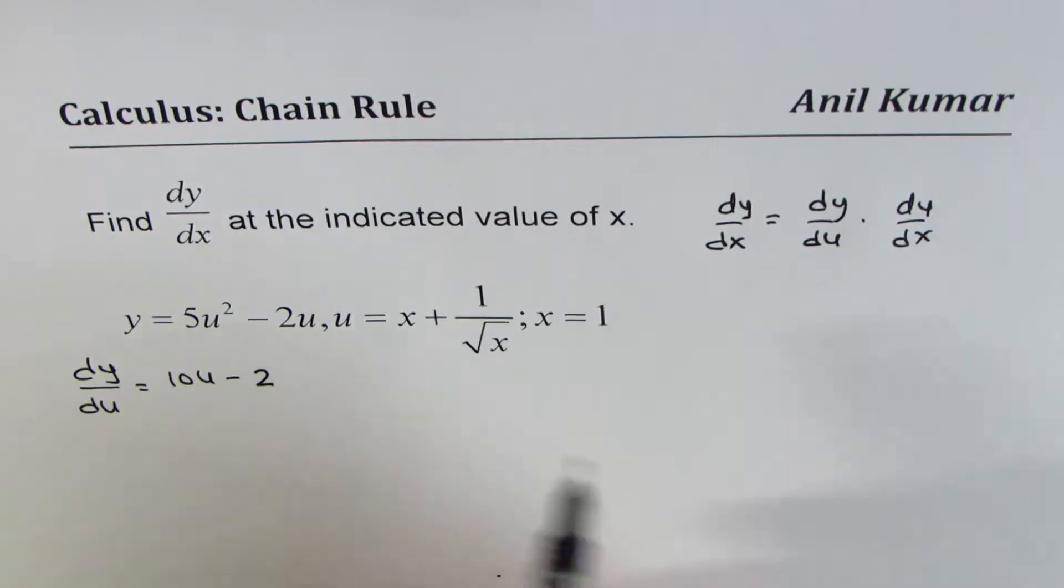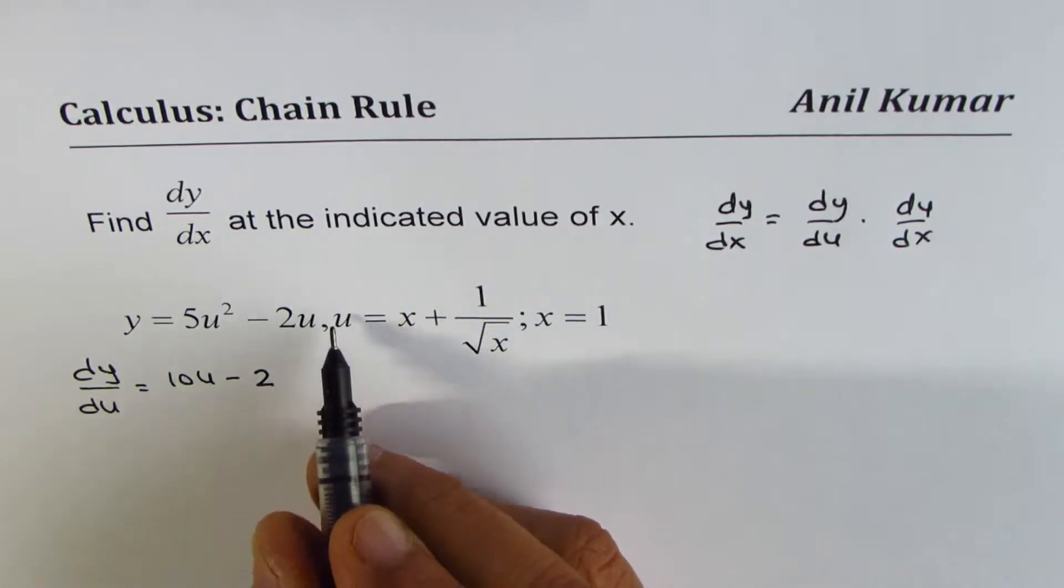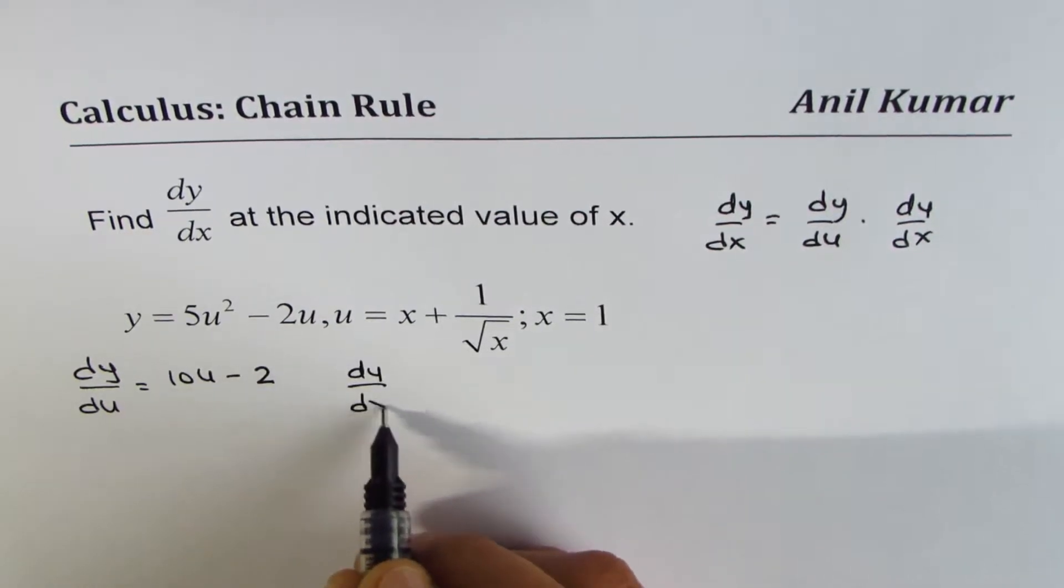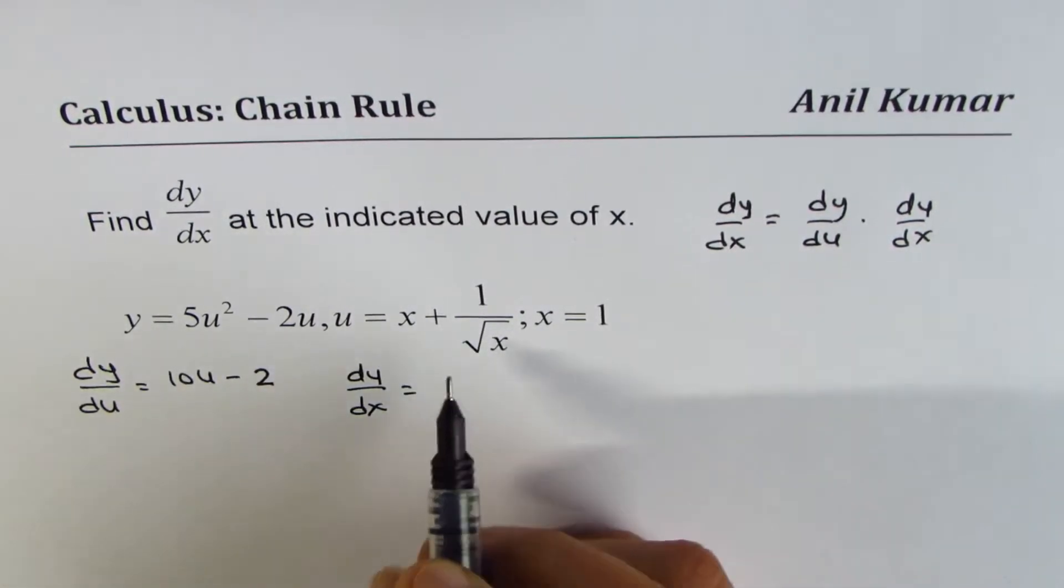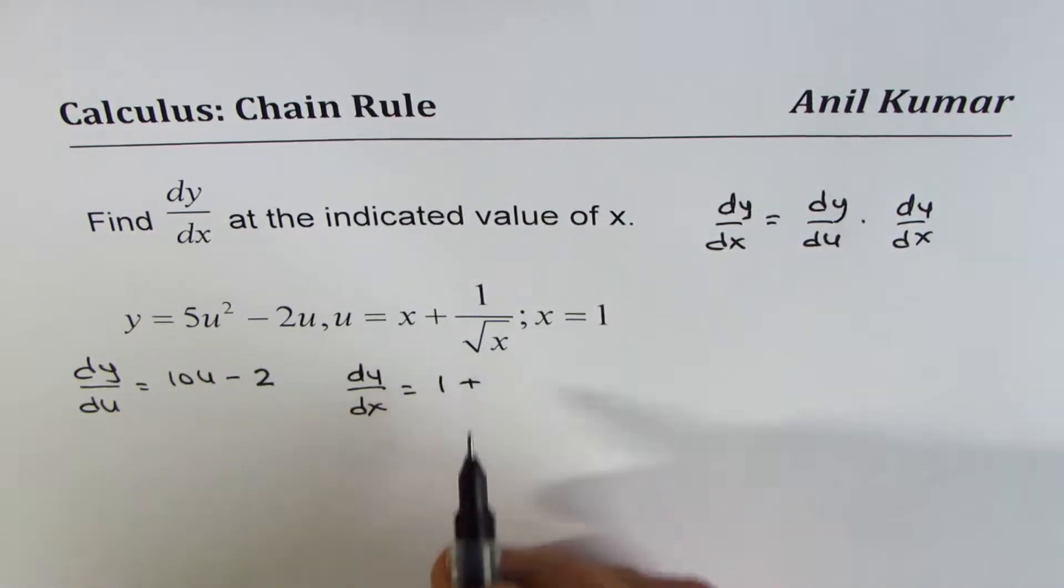And let's also find what is du/dx. u is x plus 1 over square root x.